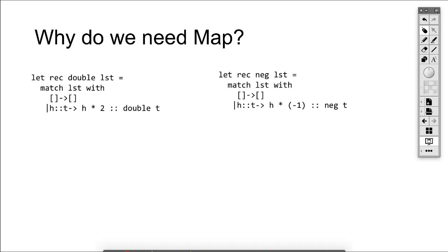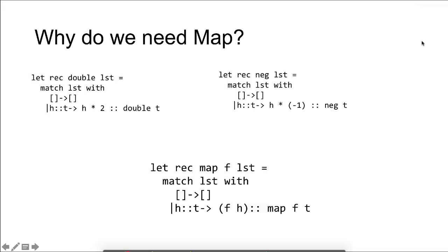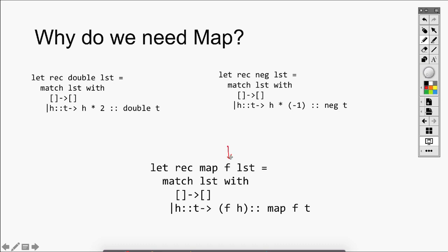Now let's look at these two functions. The function double and negate look very similar. They both return an empty list if the list is empty. If the list is not empty, they split the head and the tail and process the head and recursively process the tail. Now we want to generalize the function — that will be our map. Map takes a function as an argument (that will be our double or negate function), takes a list, applies that function to the head, and then recursively processes the tail, putting them together as a list. Now map can be applied for all different kinds of scenarios.